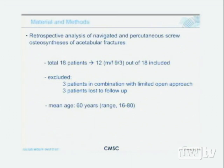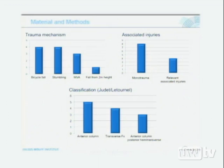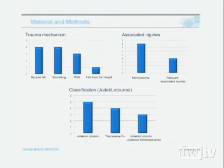We have a total of 18 patients, excluding three who required a limited open approach and three lost to follow-up. The mean age was 60 years. Trauma mechanisms included bicycle falls and stumbling. Most cases were monotrauma with simple, non-strongly displaced fractures. The most common fracture types were anterior column, transverse, and anterior column with posterior hemitransverse fractures.